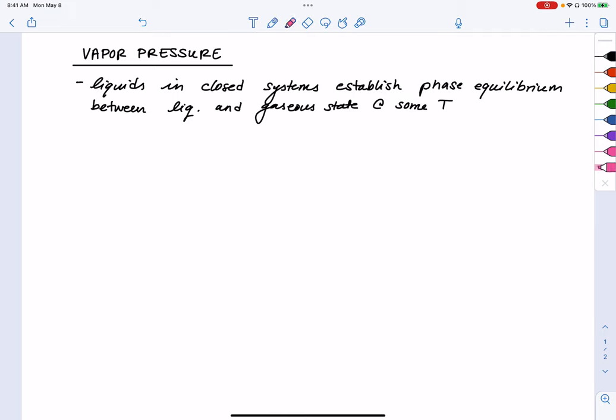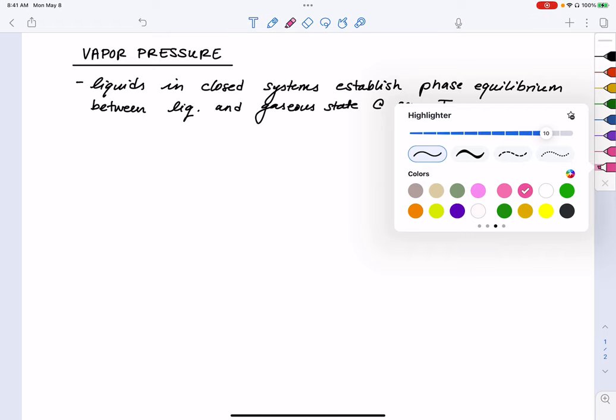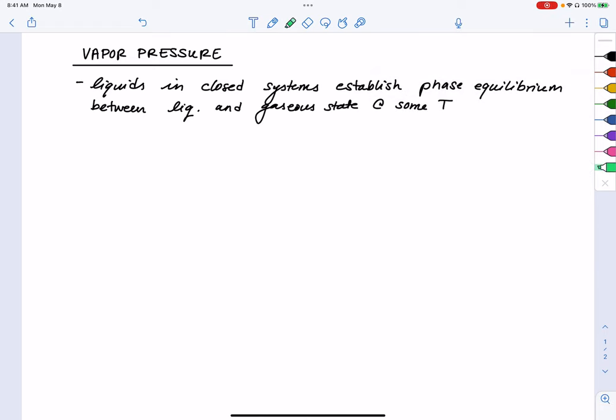So to start us off, I am going to make a statement here. I've said that for liquids in a closed system, meaning like if I've got a liquid in a jar or a sealed beaker or just any kind of closed vessel, that liquid will establish a phase equilibrium with itself, specifically a phase equilibrium that exists between the liquid and gaseous state of that phase at some temperature.